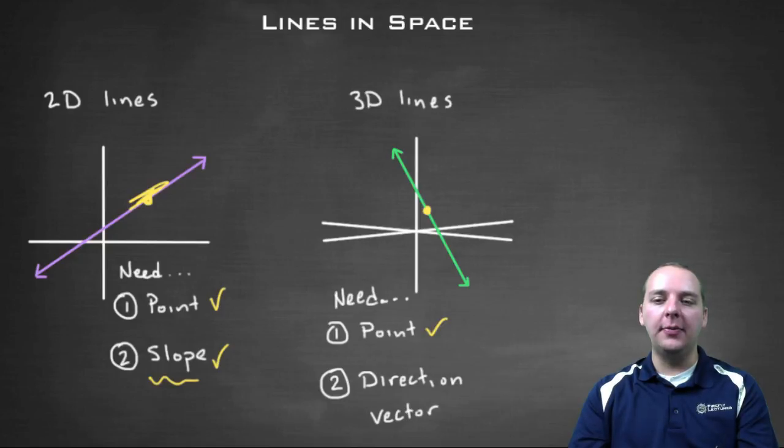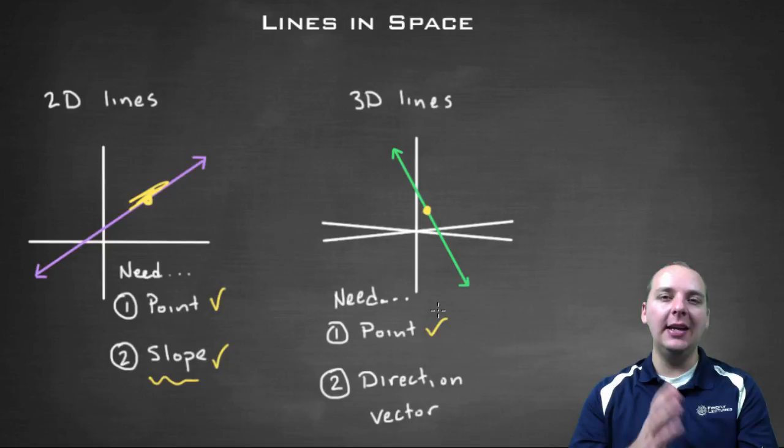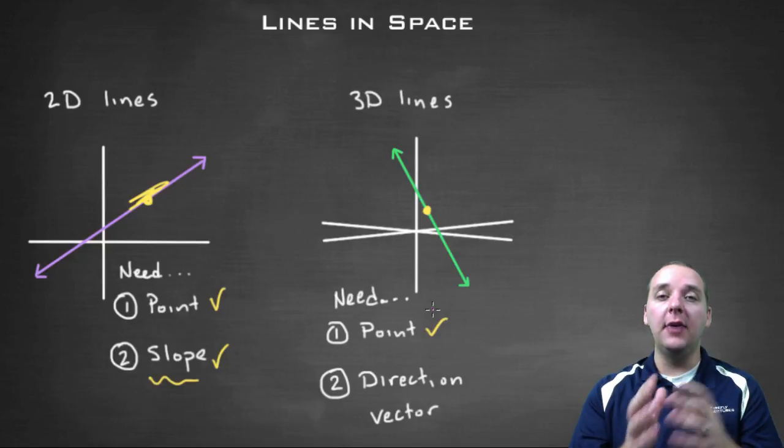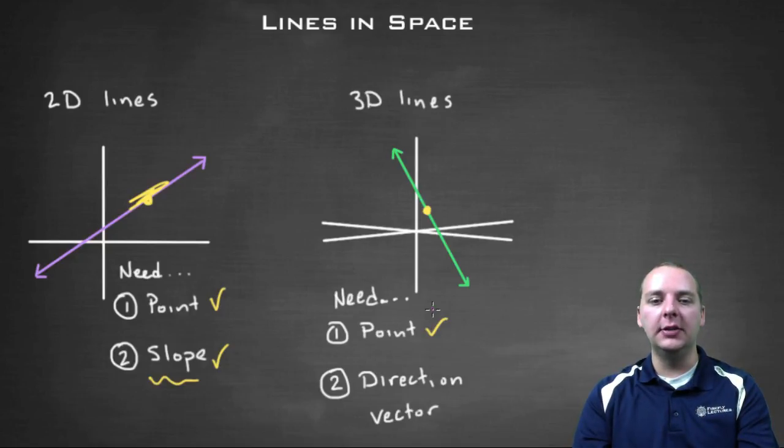But what we do have that kind of gives us the same thing that we were after when we're talking about slope is we do have vectors in space. So we can indicate a direction, not using a numerical value like slope, but using a vector that we've studied recently. So we need not only a point in space that the line goes through, but also what's known as a direction vector for the line.